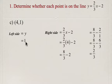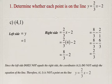Keep in mind that our left side is 1 and our right side is 2/3. Since the left side doesn't equal the right side, the point is not on this line.